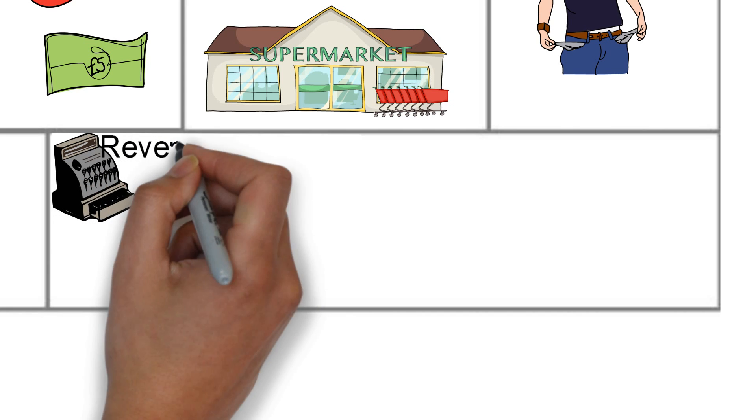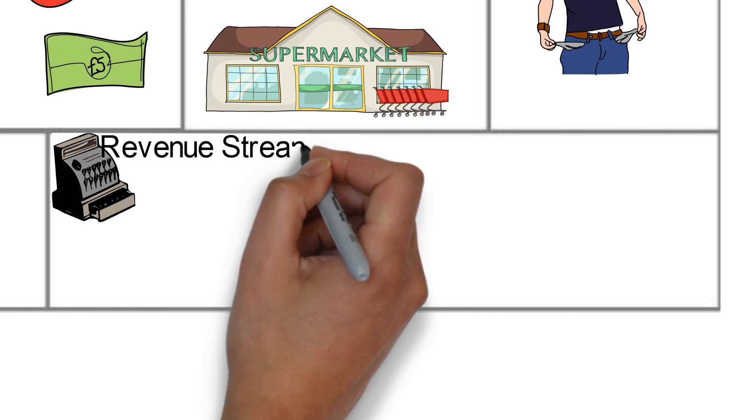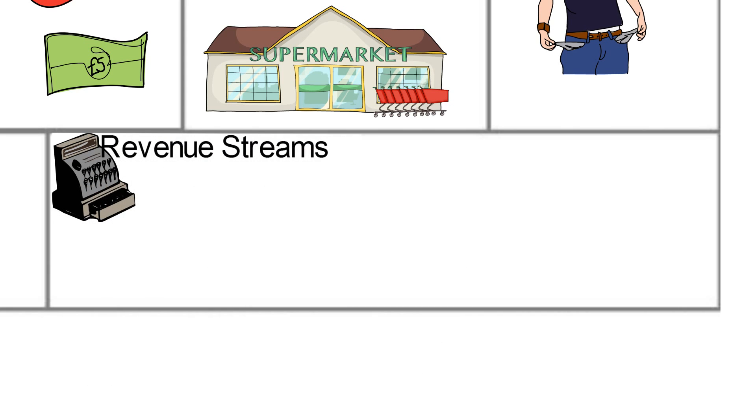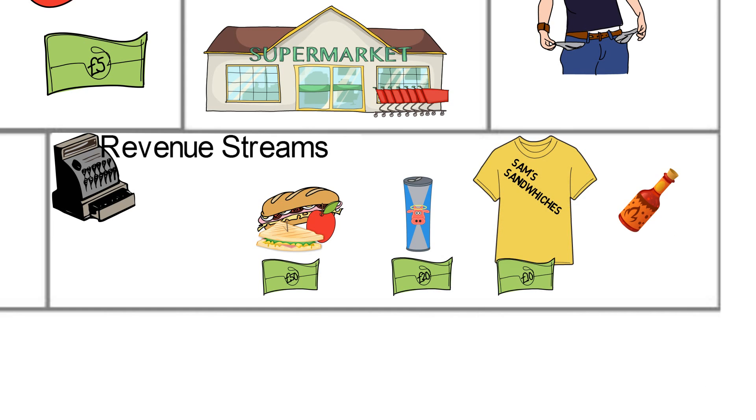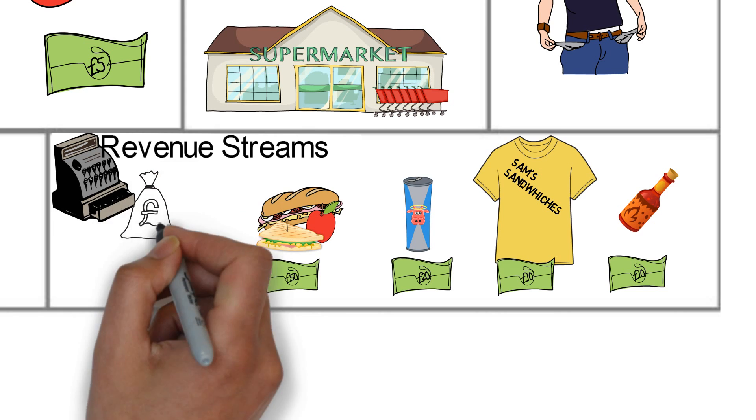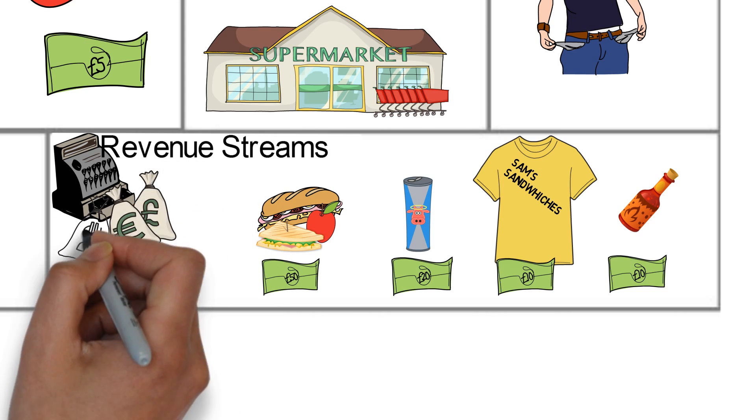After this comes every startup's favorite part: adding up all the money that you have made through your sales. For Sammy, this includes the revenue made off of his sandwiches and drinks, but it also includes the revenue from apparel sales and even selling little bottles of a secret hot sauce. All this combines into a nice green pile for Sammy.